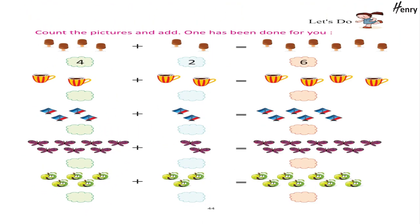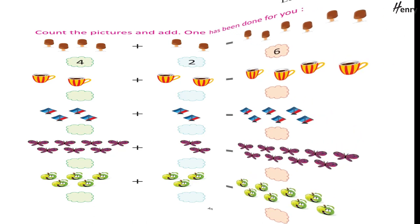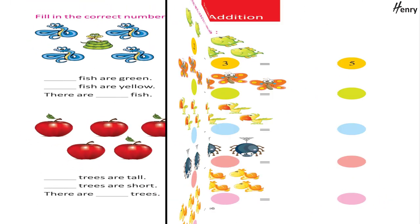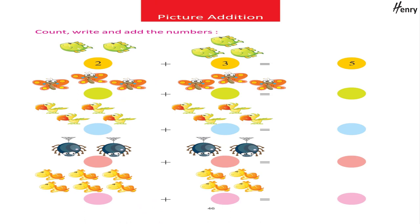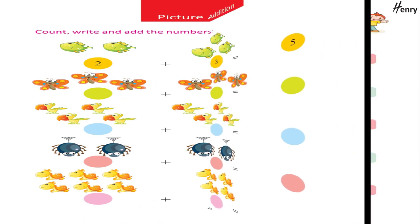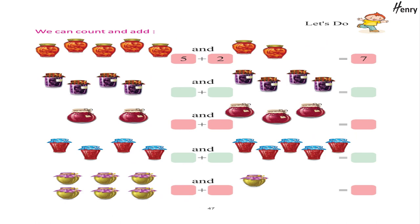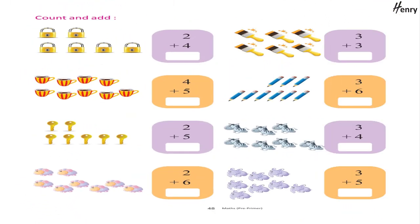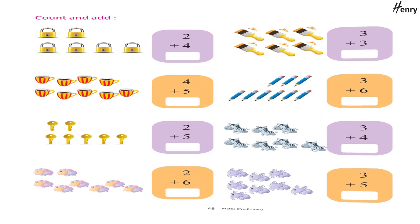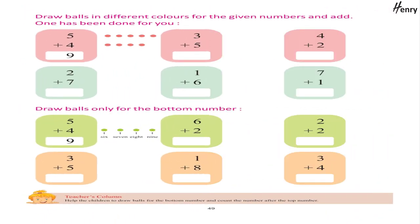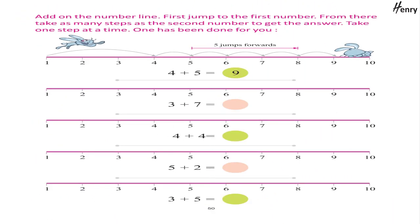Let's do — count the pictures and add; one has been done for you. Fill in the correct number. Picture addition: count, write and add the numbers. Let's do — we can count and add. Count and add. Draw balls in different colors for the given numbers and add; one has been done for you. Draw balls only for the bottom numbers. Add on the number line — first jump to the first number, then take as many steps as the second number to get the answer.